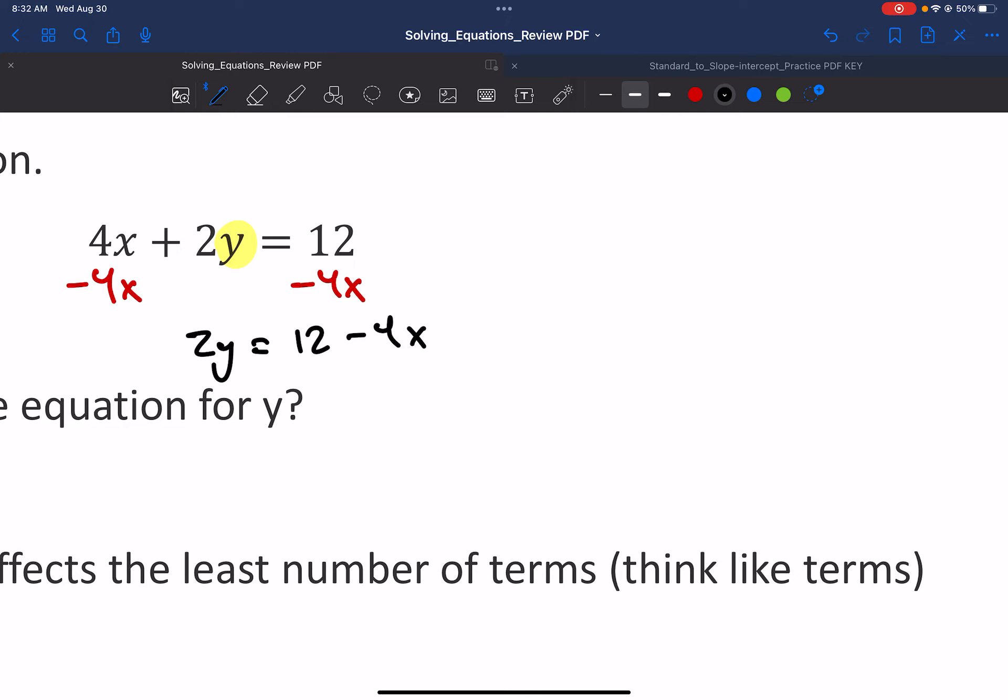On the right side, we'd have 12 and negative 4x. We can't combine those. So, let's just write them together. 12 minus 4x. All right. And then from here, we can solve for y. We can divide by 2, divide by 2. We now have 1y equals 6 minus 2x. And that's basically slope intercept form. It's just that it's written a little bit backwards. Instead of y equals mx plus b, this is more like b plus mx. Where the negative 2 is our slope. And the 6 is our y intercept.